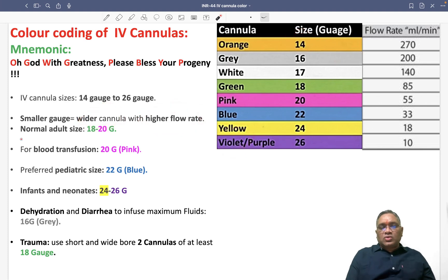Normal adult size is 18 to 20 gauge. Remember, 18 to 20 means 18 is green color, 20 is pink color. 18 to 20 gauge is the normal adult size.